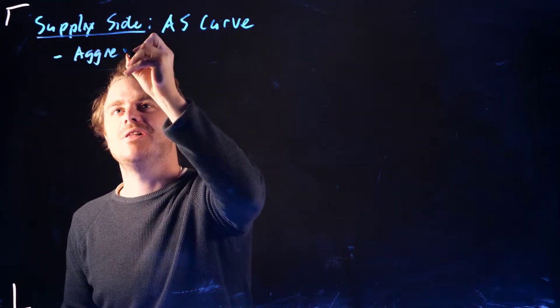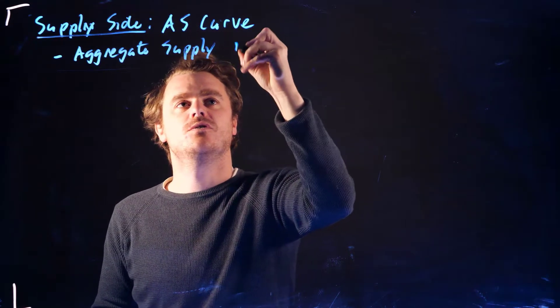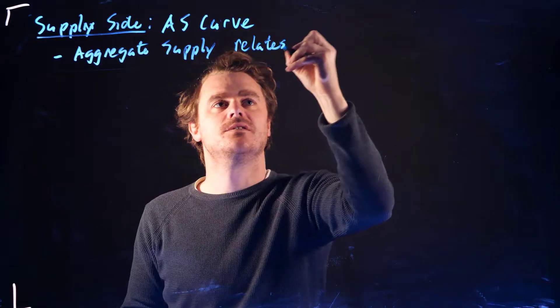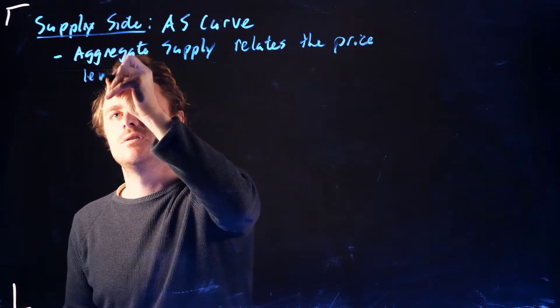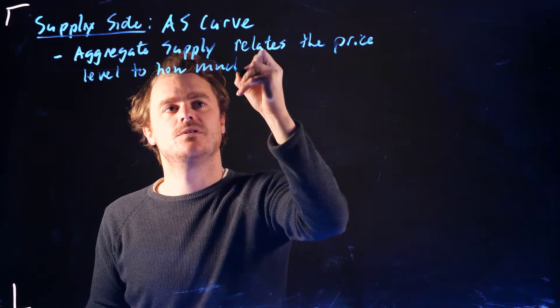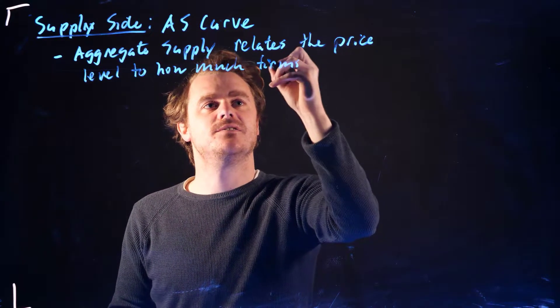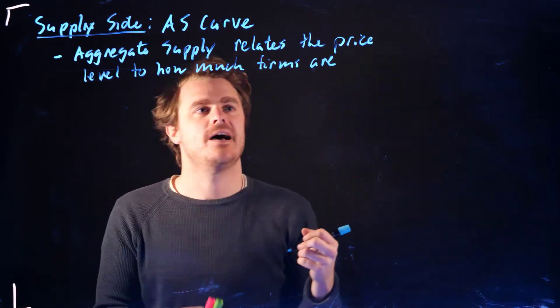So aggregate supply relates the price level to how much firms are willing to sell, the quantity that firms are willing to sell at that price level.